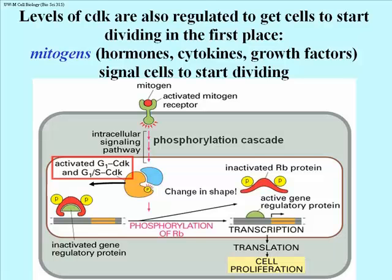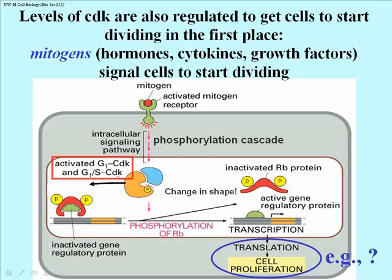RB is the retinoblastoma protein found in all cells, but originally associated with a mutation causing eye tumors, hence the name retinoblastoma. The RB protein is the inhibitory subunit of a transcription factor. When it's phosphorylated, it dissociates from the DNA binding subunit of that transcription factor, which can then turn on some genes. You can think about what kinds of genes might actually be turned on by the action of a mitogen and by the action of this transcription factor binding to the promoter regions of several different genes.